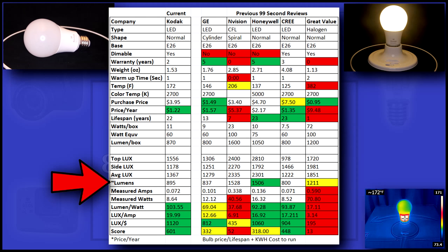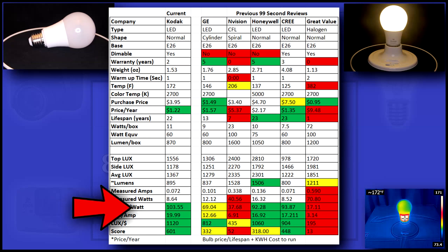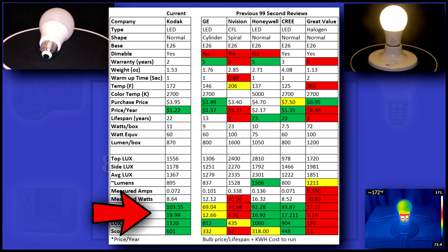This bulb managed to produce more lumens and use less watts than advertised. This Kodak bulb broke records in all three categories. It even surpassed 100 lumens per watt.